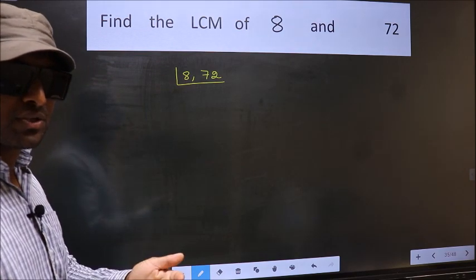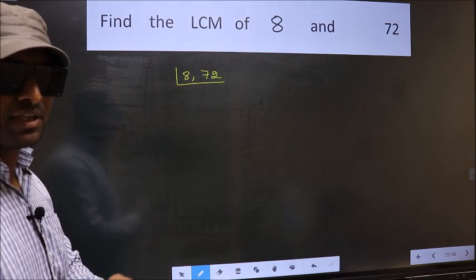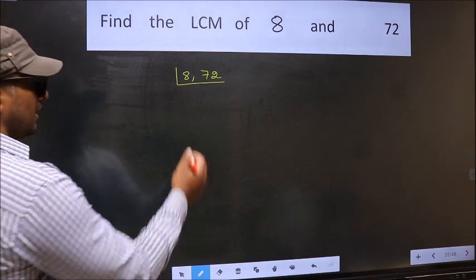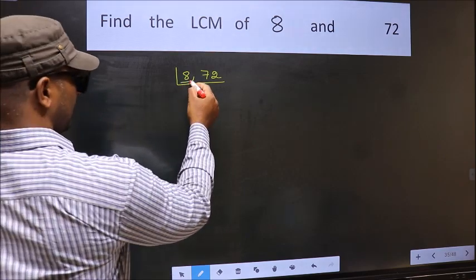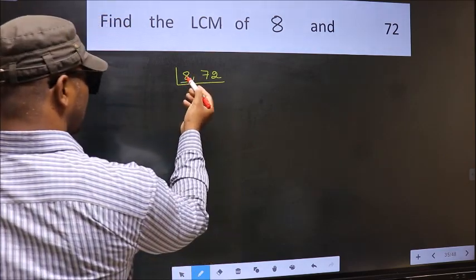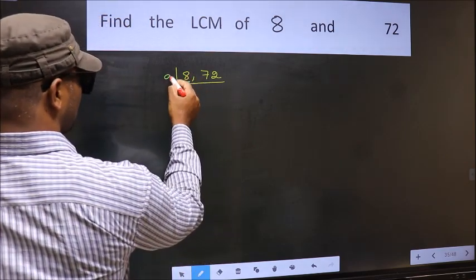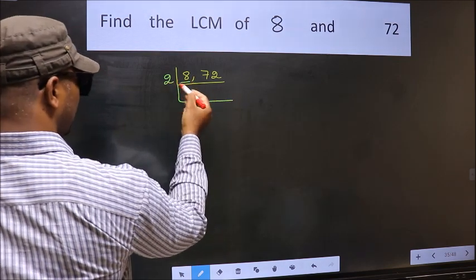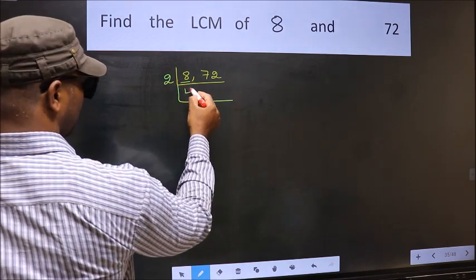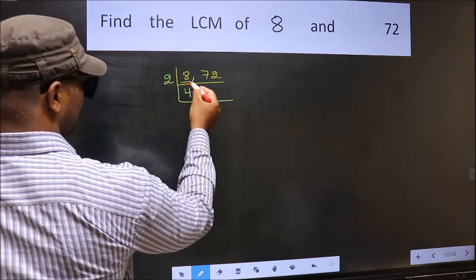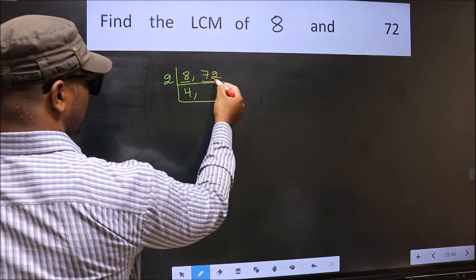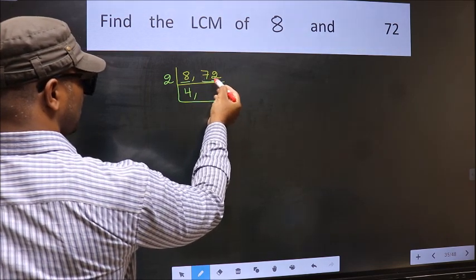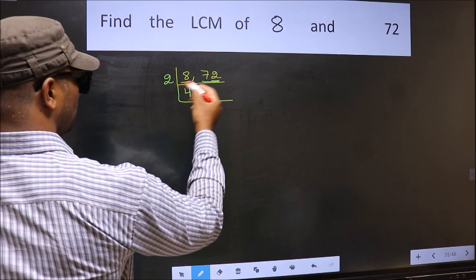Now you should focus on the first number, which is 8 here. 8 is an even number, so take 2. When do we get 8 in the 2 table? 2 times 4 is 8. Now the other number 72 — last digit 2, even — so this number is divisible by 2.